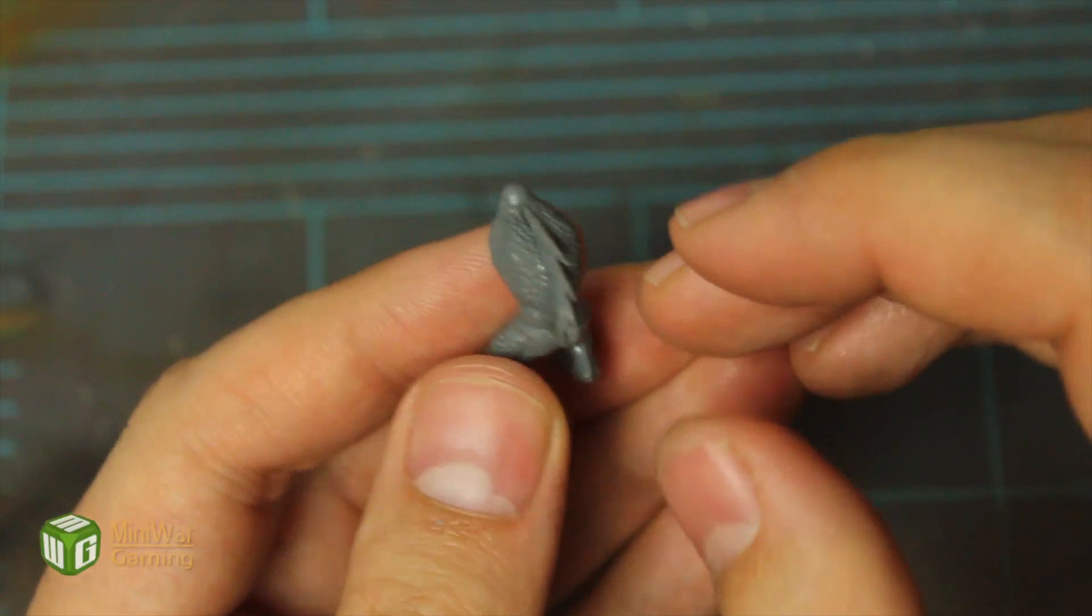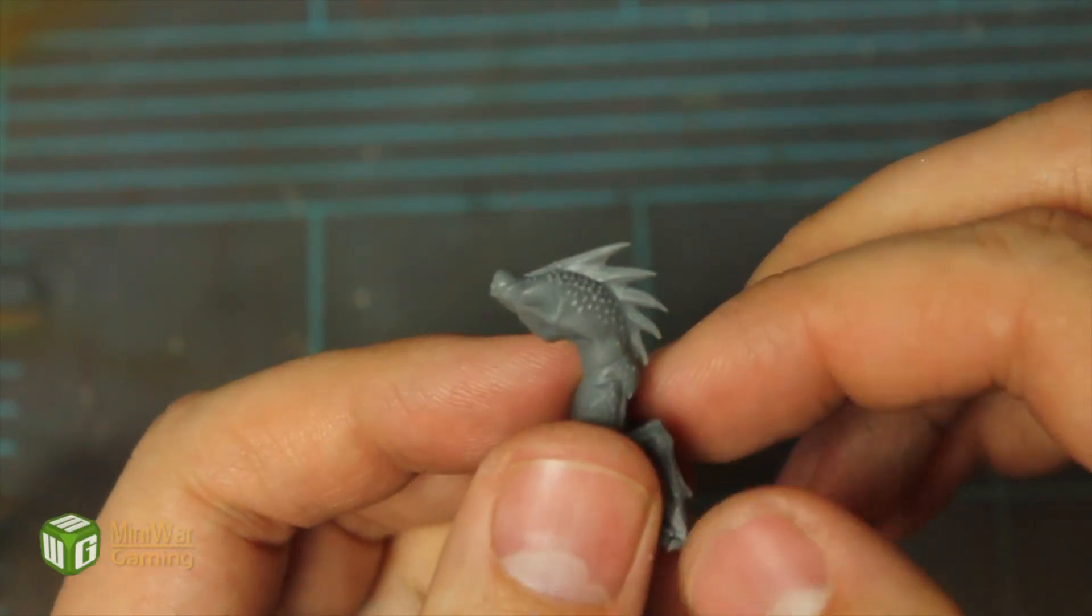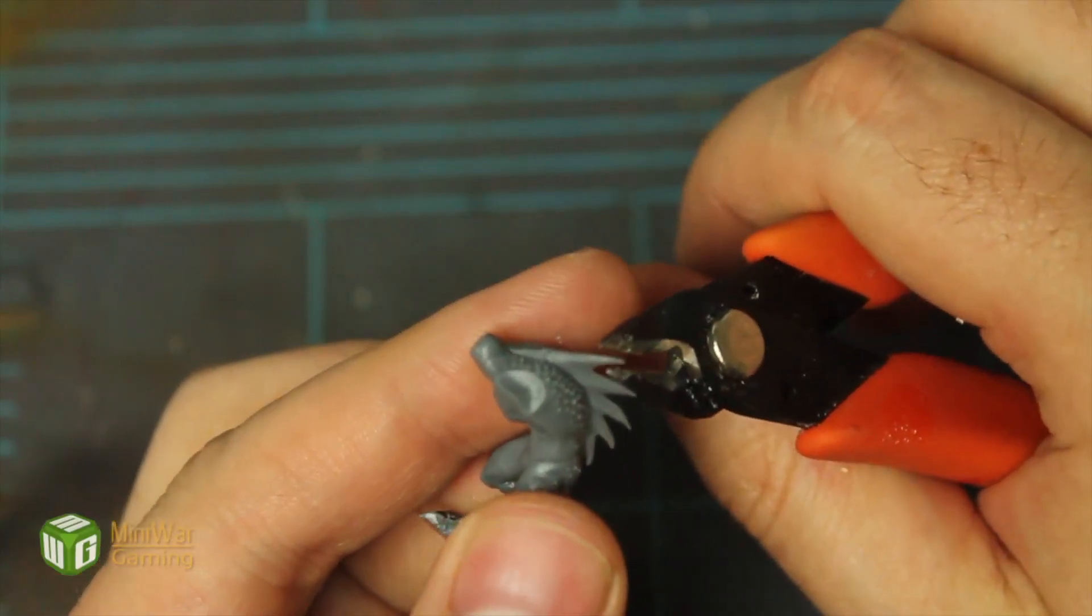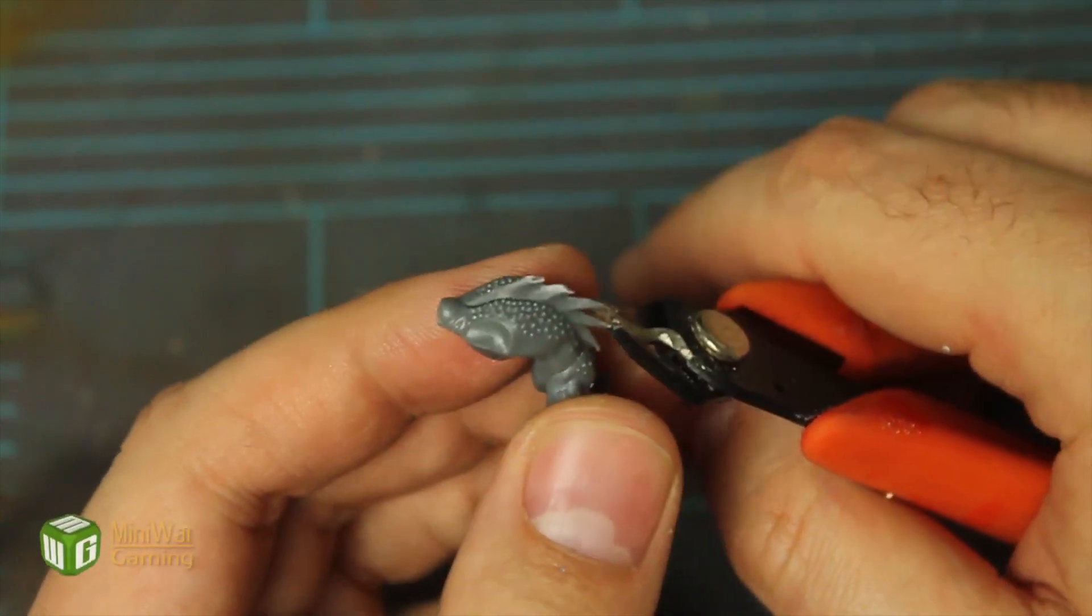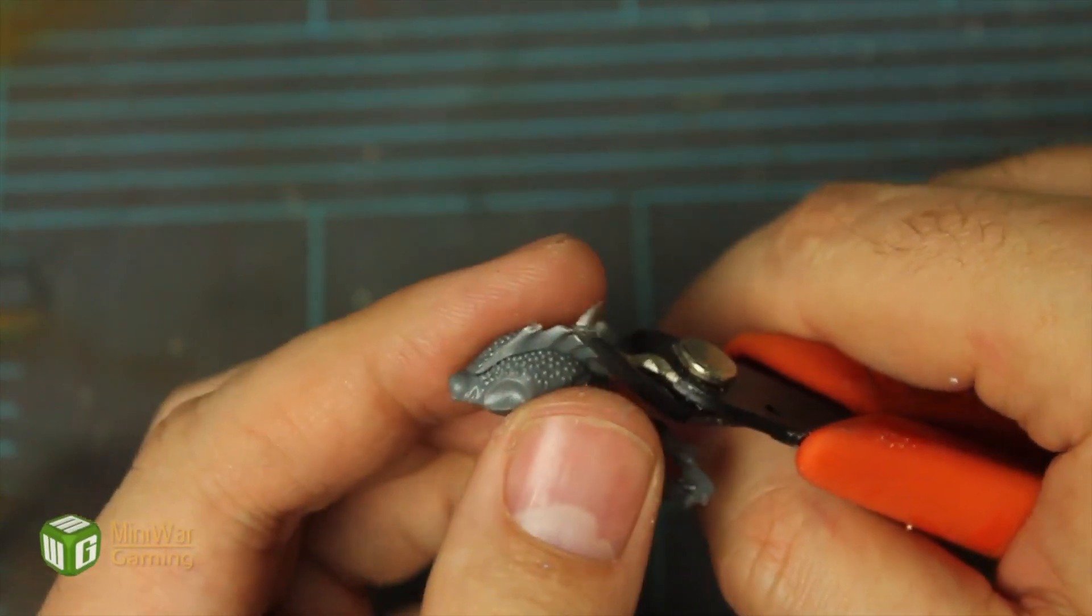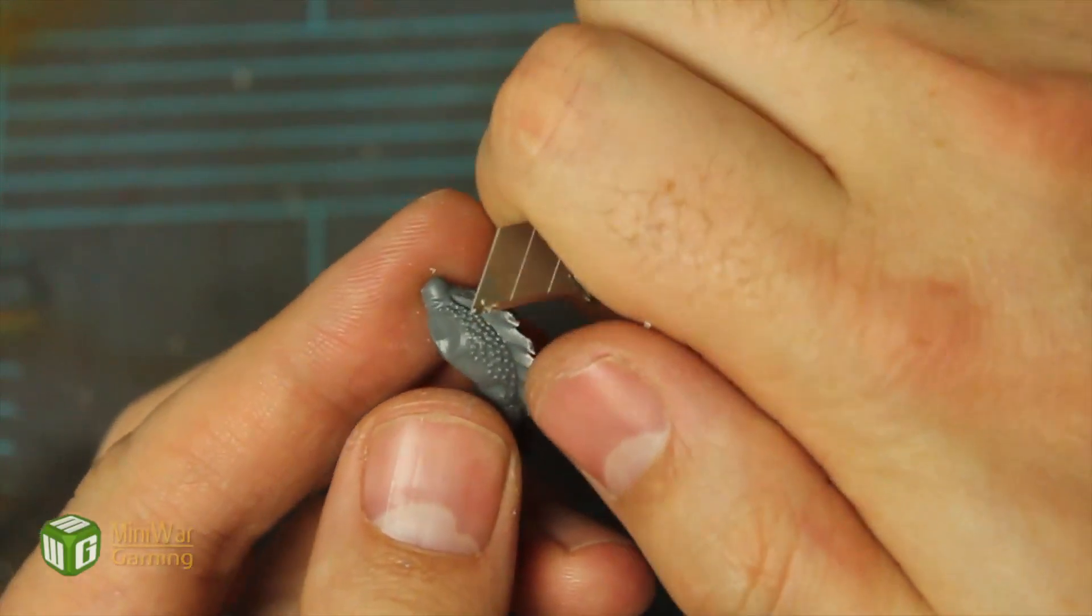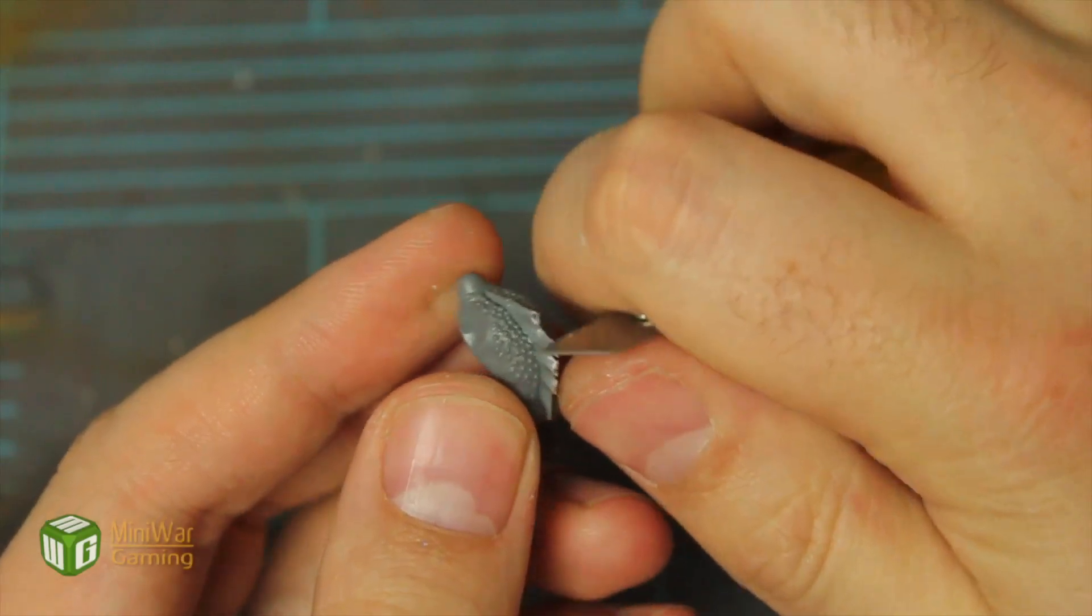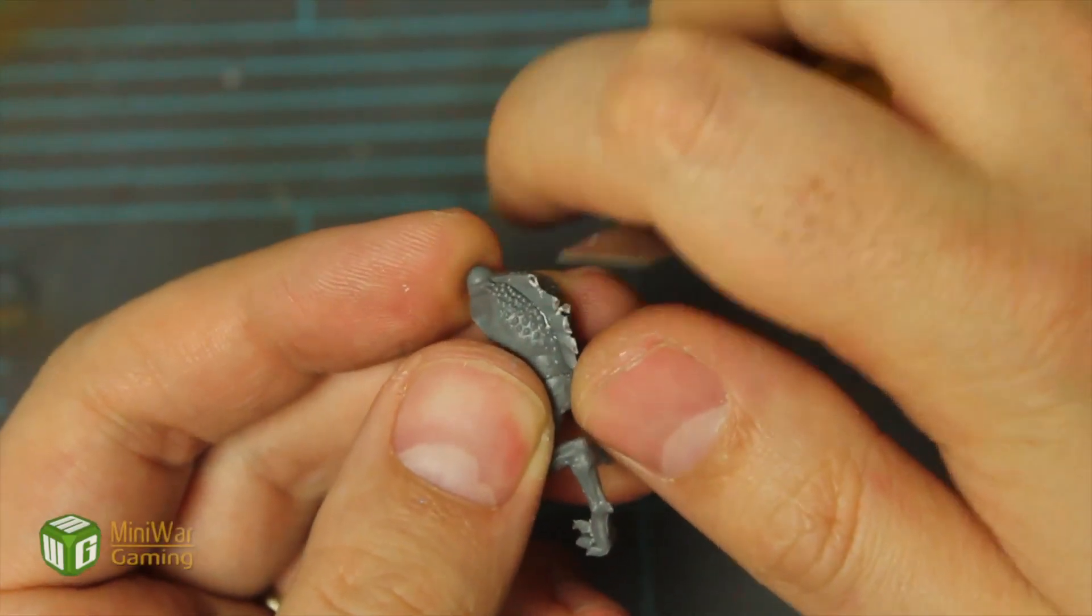Just glue that down, and once that dries, we're going to start snipping off the ends of these to make them look a little bit more like just bony protrusions from the back. Take that down first, and then we will start reshaping those. Just blunt those off, make sort of a sawtooth pattern.